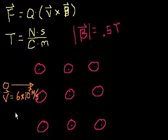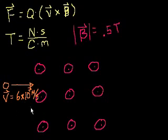That velocity is about a fifth of the speed of light, so we're pretty much in the relativistic realm, but we'll assume the mass hasn't increased significantly at this point. So we have this proton going at a fifth of the speed of light crossing through this magnetic field. The first question is: what is the magnitude and direction of the force on this proton from this magnetic field?